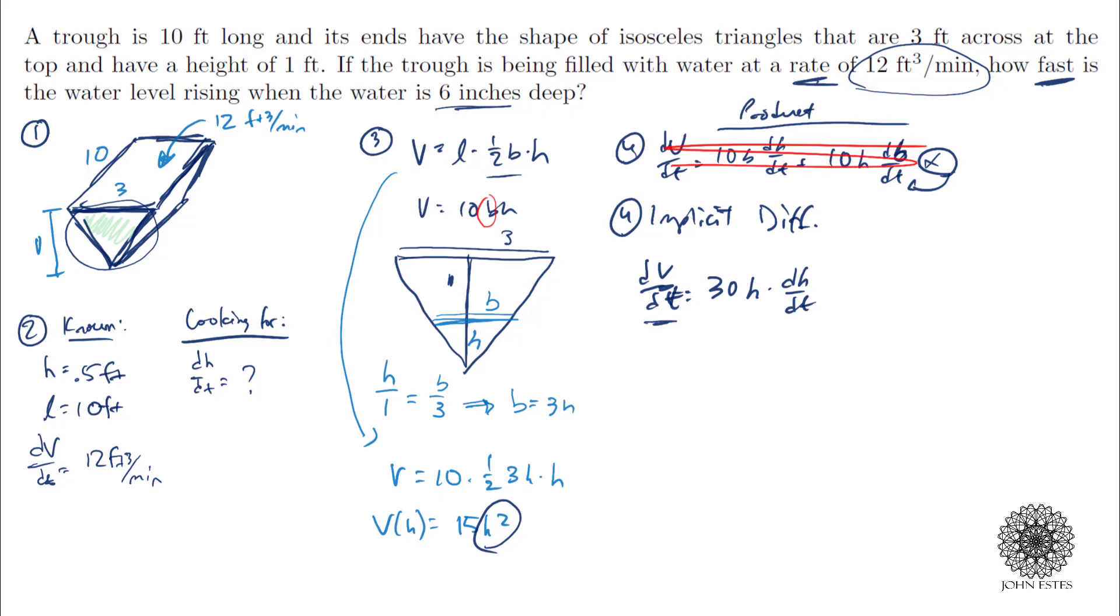I know dV/dt, and I know h. I'm trying to solve for dh/dt, and that's part five here. It's just the solve. So I'm going to plug in my values. I have twelve cubic feet per minute equals thirty times point five dh/dt. So I know thirty times a half is fifteen. So I end up with twelve over fifteen, or I can reduce that down by dividing by three as four-fifths.